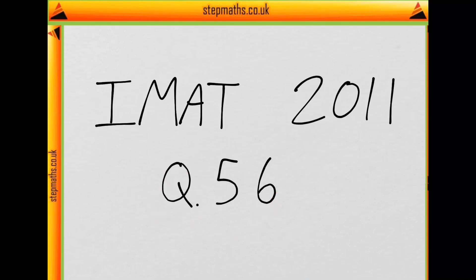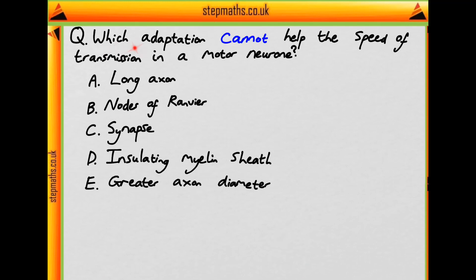This video is on question 56 from the 2011 IMAT paper. In this question we're asked which adaptation cannot help the speed of transmission in a motor neuron and we're given the options: long axon, nodes of Ranvier, synapse, the presence of an insulating myelin sheath, and a greater axon diameter.